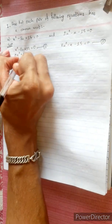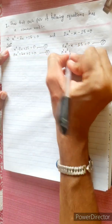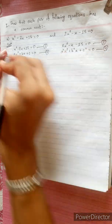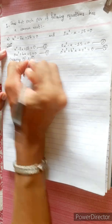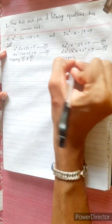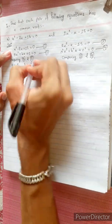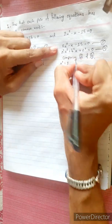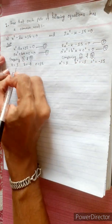We will compare it by the standard form ax squared plus bx plus c equals 0, and a-dash x squared plus b-dash x plus c-dash equals 0. Comparing equations 1 and 3, and equations 2 and 4, the values are: a equals 1, b equals minus 8, c equals 15, a-dash equals 2, b-dash equals minus 1, c-dash equals minus 15.